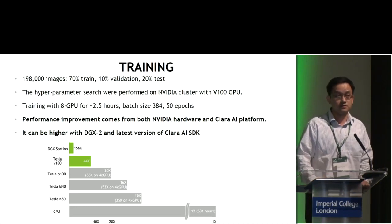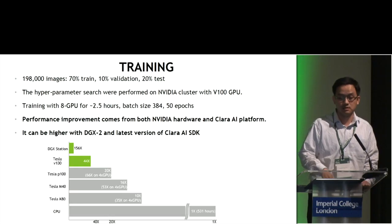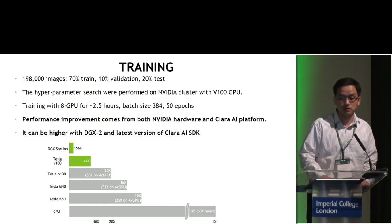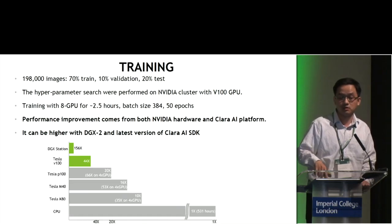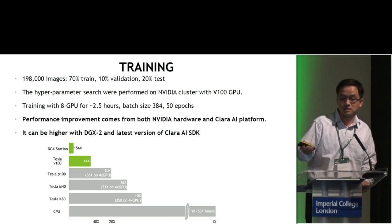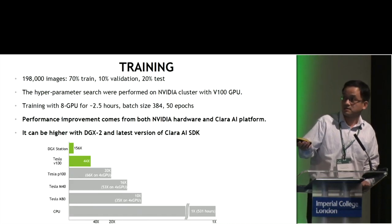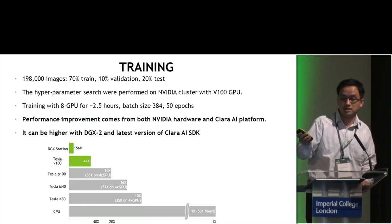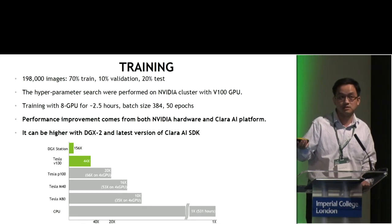In terms of training, we used 70% for training, 10% for validation, and 20% for testing. Hyperparameter search was performed on NVIDIA's cluster with V100 GPUs. Training is done on eight GPUs for about 2.5 hours, with a batch size of 384, and each network is trained for 450 epochs. The Tesla V100 is 44 times faster than CPU and even faster than the Tesla K80.